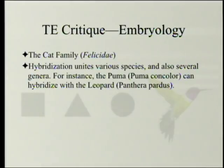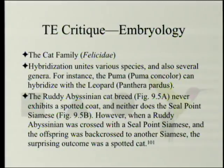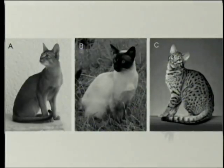The cat family: hybridization unites various species and also several genera. For instance, the puma, Puma concolor, can hybridize with the leopard, Panthera pardus — a completely different genus. The ruddy Abyssinian cat breed never exhibits a spotted coat, and neither does the seal point Siamese. However, when a ruddy Abyssinian was crossed with the seal point Siamese and the offspring back-crossed to another Siamese, the surprising outcome was a spotted cat — the Ocicat.